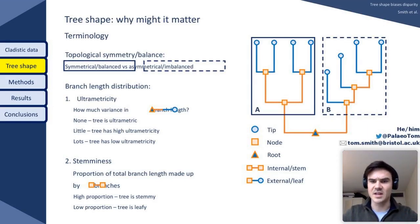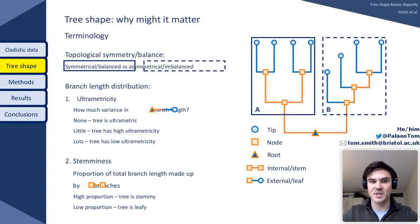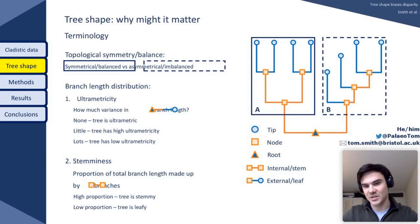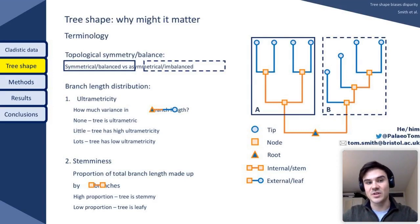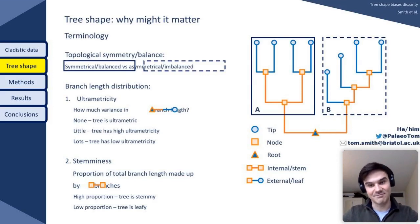I'll also discuss branch length distribution in terms of ultrametricity — whether a tree has any variance in its root-to-tip distance; if not, it's ultrametric — and stemminess, which is simply the proportion of a tree made up by internal branches, the branches that subtend nodes within the tree. If that proportion of total branch length is high, the tree can be described as stemmy; if it's a low proportion, the tree can be described as leafy.